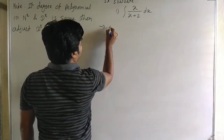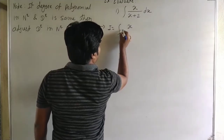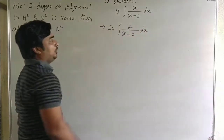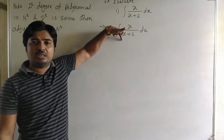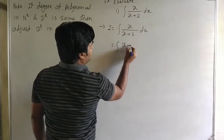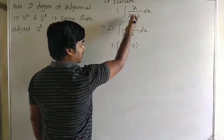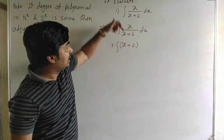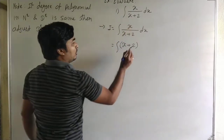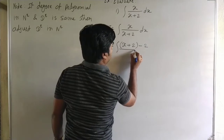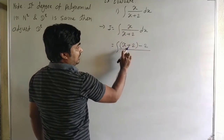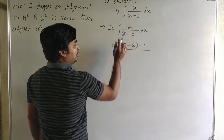So it is integral of x upon x plus 2 dx. Here degree of polynomial in numerator and denominator is same — degree 1 in both. Then adjust denominator in numerator. The denominator is x plus 2, but our numerator is x. So we can write x plus 2 minus 2, and the denominator x plus 2 minus 2 gives only x. The value of the numerator does not change.